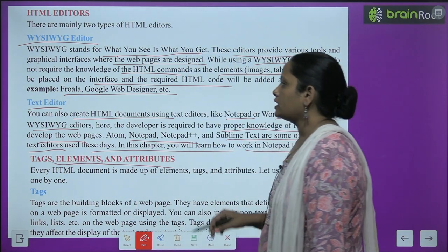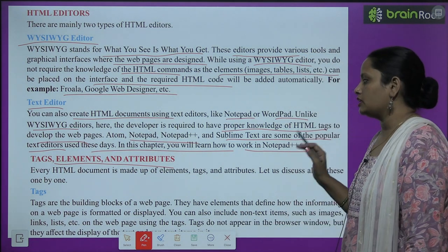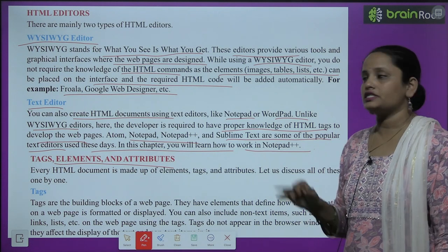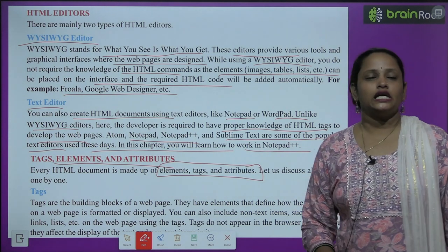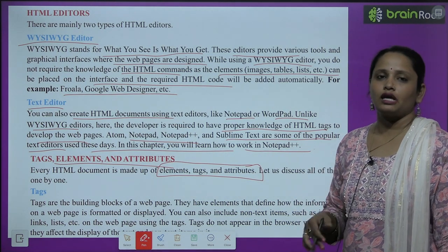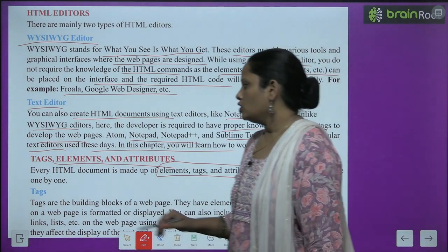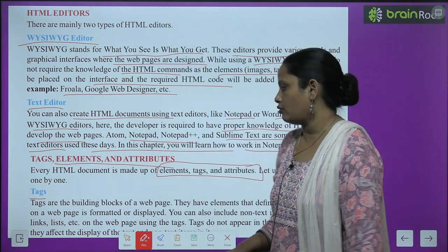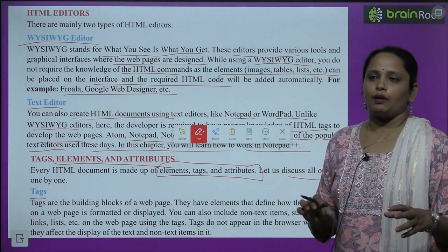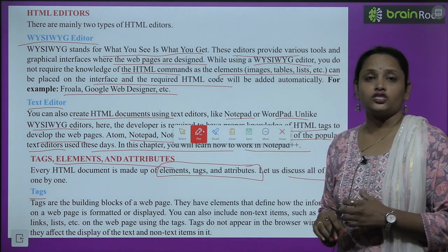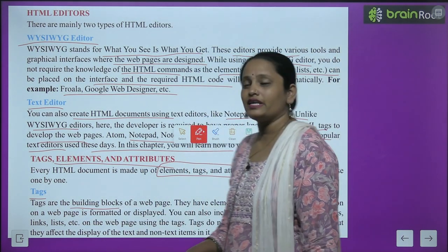Next topic: tags, elements, and attributes. Every HTML document is made up of different elements, tags, and attributes — without these three you cannot build an HTML document. Let's discuss them one by one. Tags are the building blocks of a webpage — just as bricks are needed to build a house, tags are the base of a webpage.